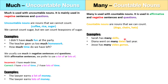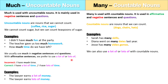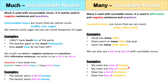Examples: Sarah has many skills. Diana went on many dates last year. Jesse has many video games. Skills, dates, and video games are all countable nouns, so we use many in front of them. We can also use a lot of or lots of with countable nouns — for example, my sister has a lot of friends, or Dean has a lot of problems. And with many in affirmative sentences, we could also say my sister has many friends, or Dean has many problems.